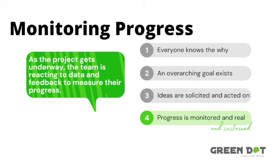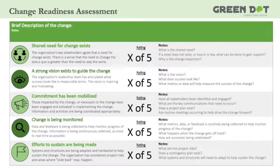The last section is your efforts to sustain the change. After the change has been implemented, hardwiring the process and the systems and structures that surround that change are necessary to ensure that the change does not slide back over time. When evaluating your performance here, you're using a scale of 1 to 5. What you want to be looking for is if the organization is actively monitoring any project risks and whether or not they have a contingency plan. Additionally, you'll want to see that the organization is willing to change and adapt their systems and structures to help hardwire the change after it's been implemented.